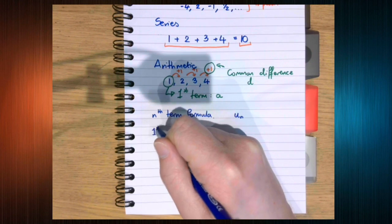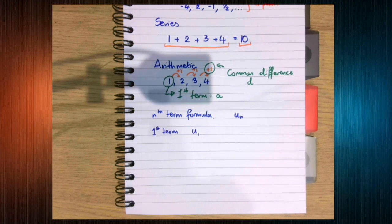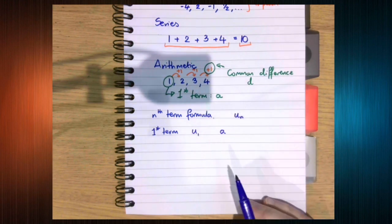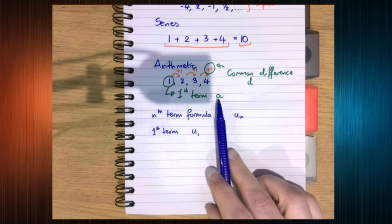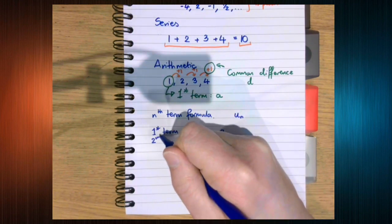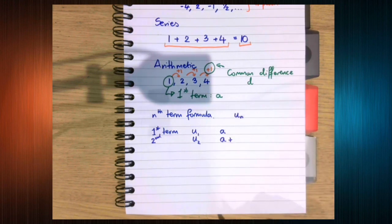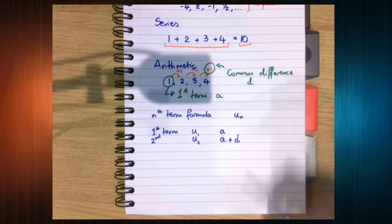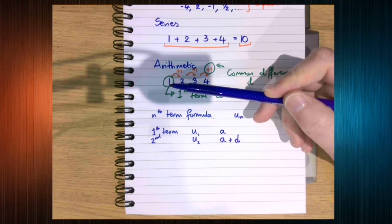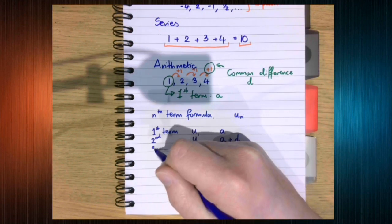So the first term would be u_1. And we know for our arithmetic progression or sequence we've said that the first term is a. So the second term would be u_2. We take the first term and we add on the common difference. So in this case our first term was 1 and we added 1. First term, add the common difference to get the second term, and so on.